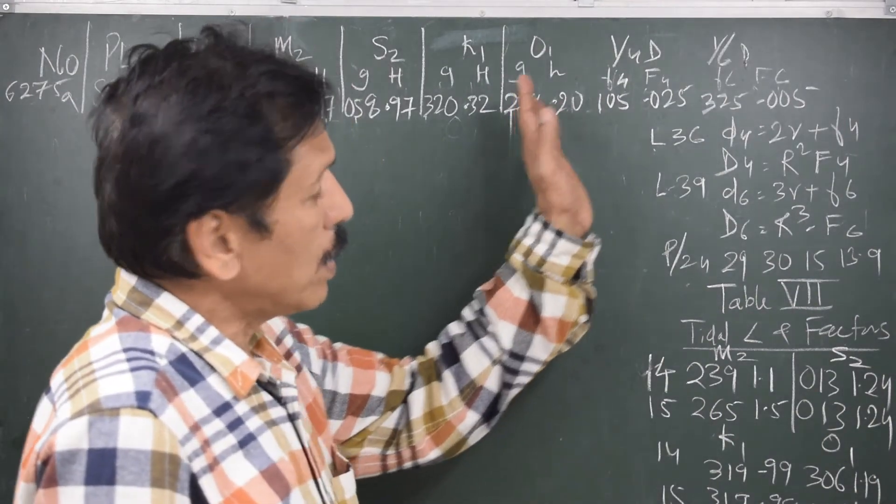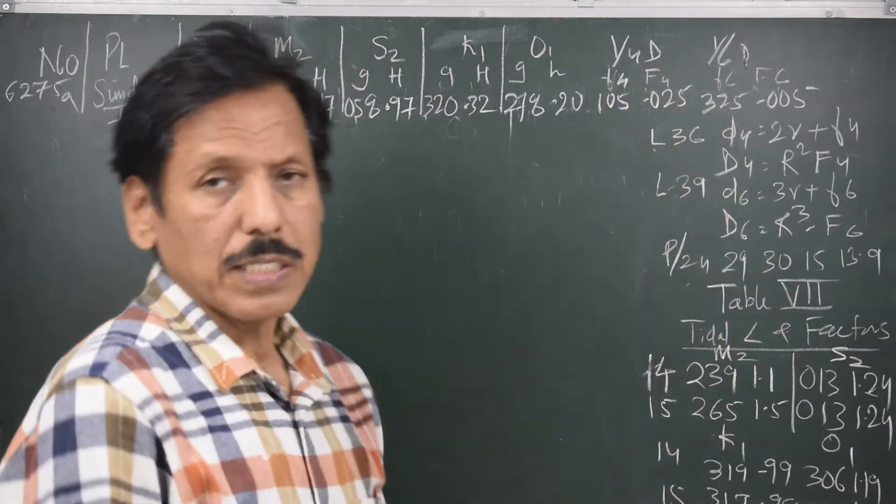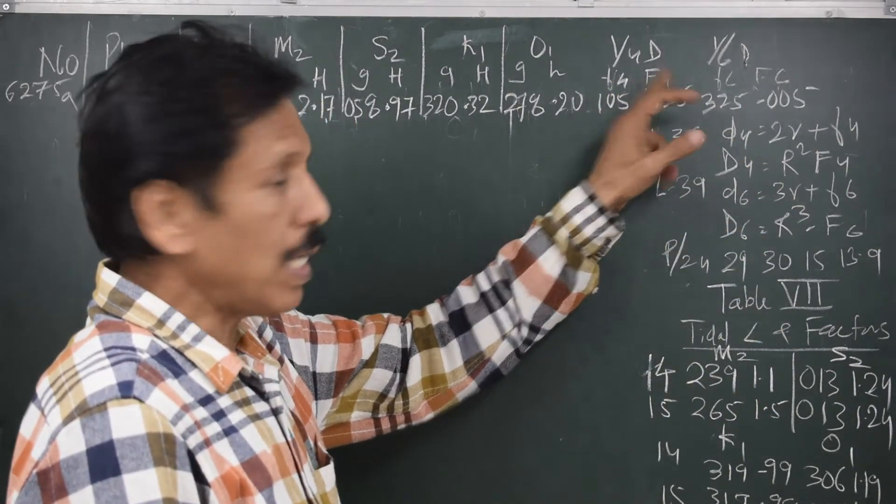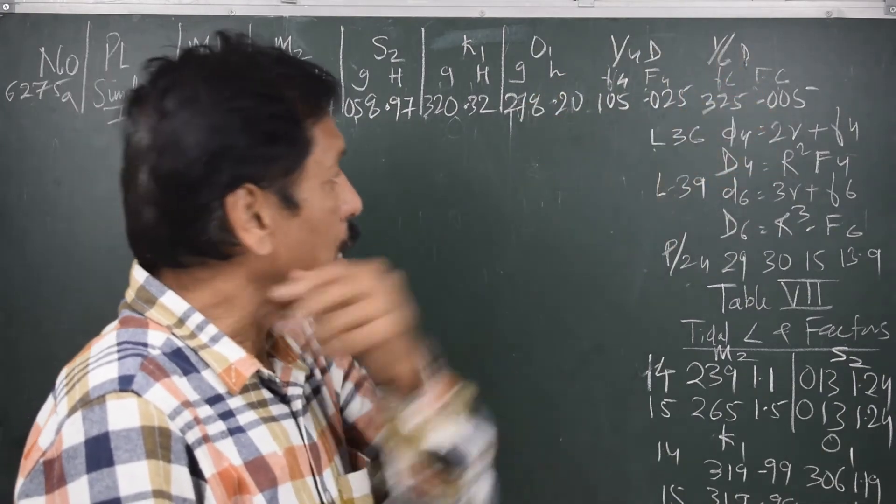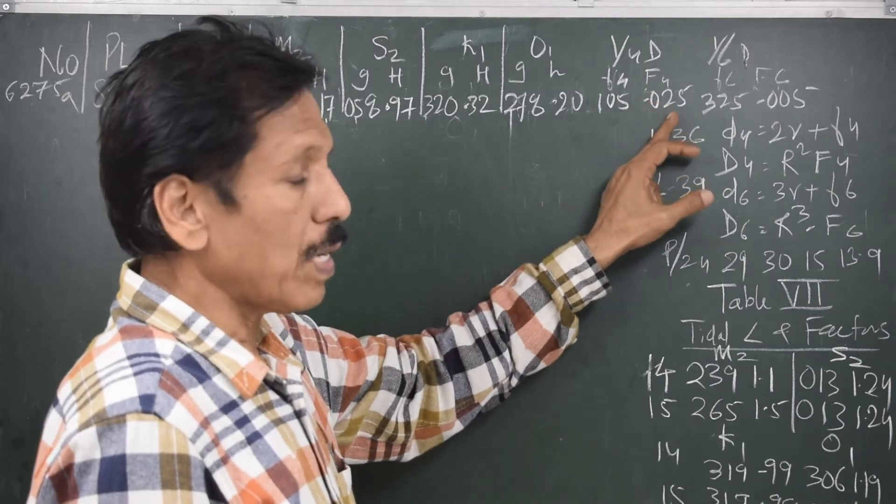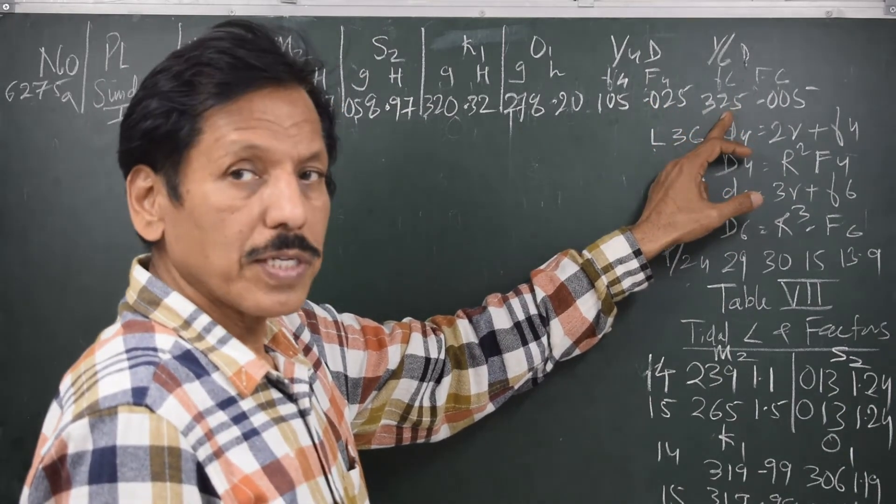On the right hand side of the page you will find the quarter diurnal and one-sixth diurnal constituents written as f4, capital F4, f6, and capital F6. Small f4 is 105, capital F4 is 0.025. f6: 325, and capital F6 is 0.005.